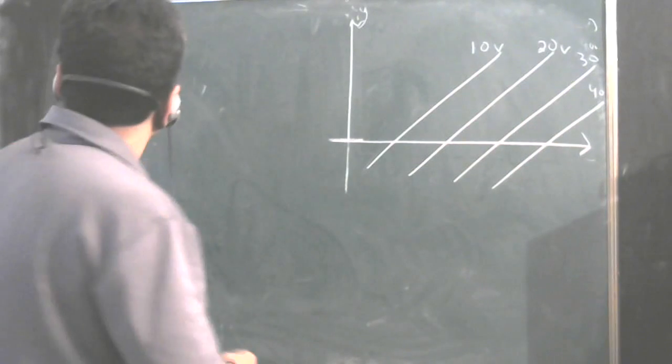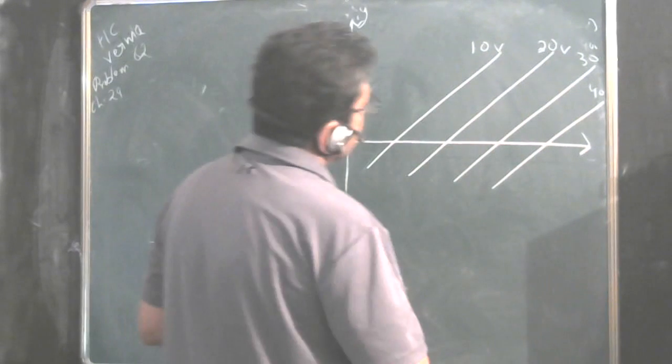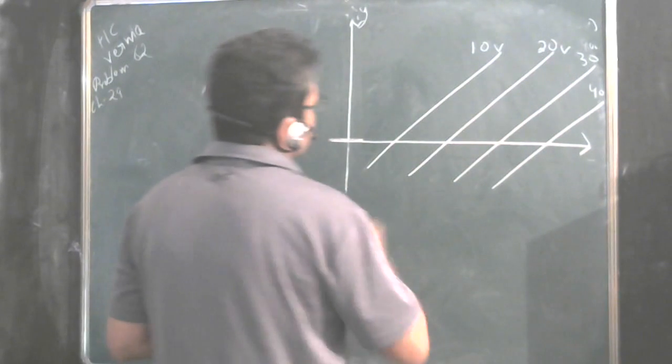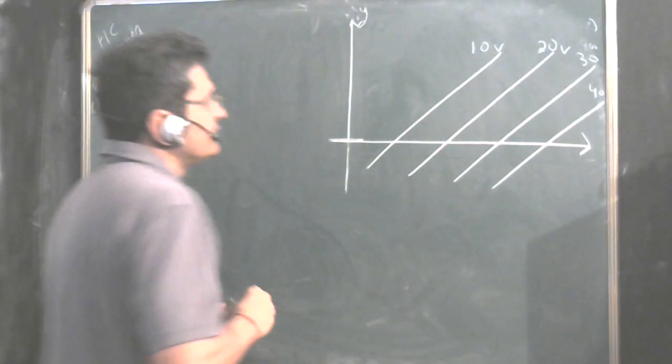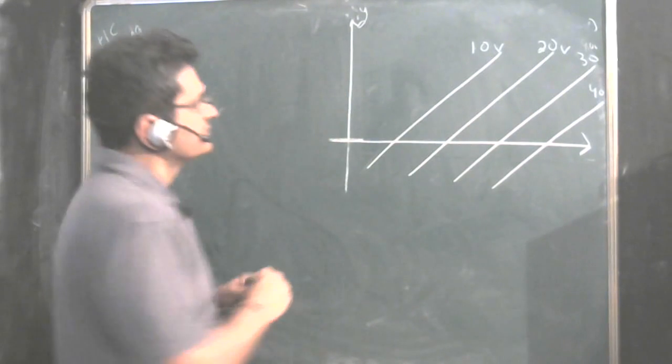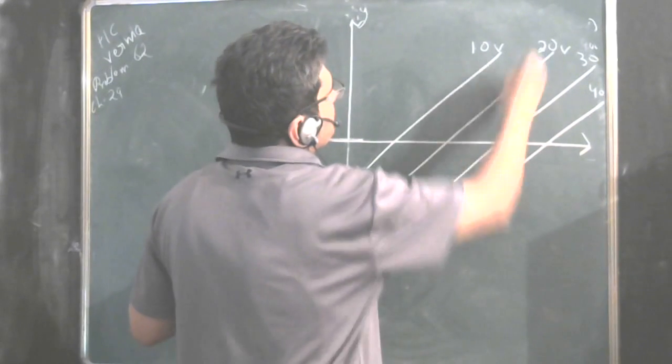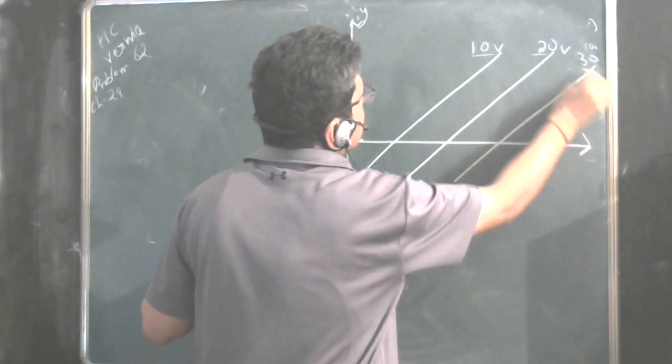We will solve problem 62, chapter 29 of HC Verma. We have to find the direction of electric field, and we have been given the equipotential surfaces. These are the equipotential surfaces, and potential is shown on each.